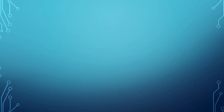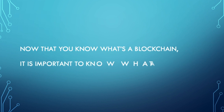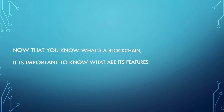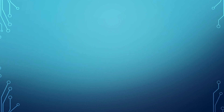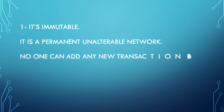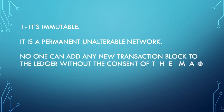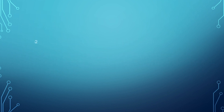Now that you know what's a blockchain, it is important that you also know what are its features. One — it is immutable, meaning it is a permanent, unalterable network. No one can add any new transaction block to the ledger without the consent of the majority of blocks.